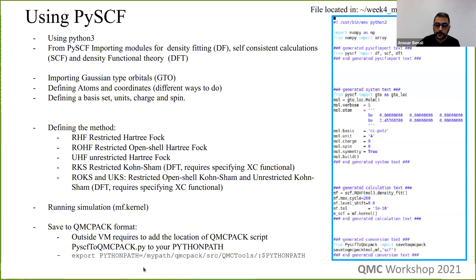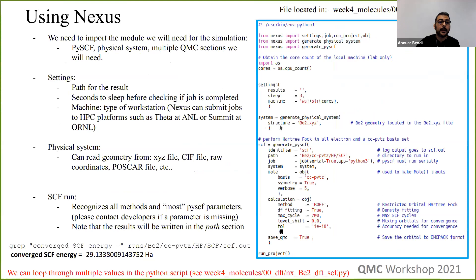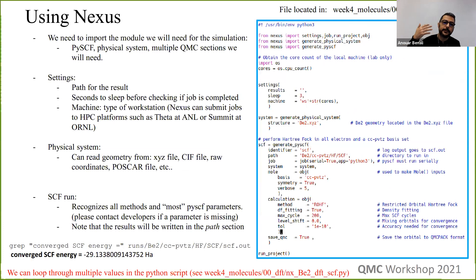Now we know what to generate, but hopefully we won't have to write files like this manually — the same file can be generated by Nexus. The reason to use Nexus is that we can build on top of each simulation block, and if something has already been computed it will not be recomputed. With raw PySCF you need to move all data manually, which can lead to errors with large amounts of data.